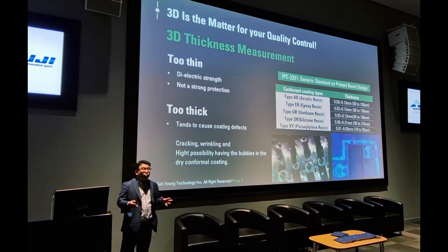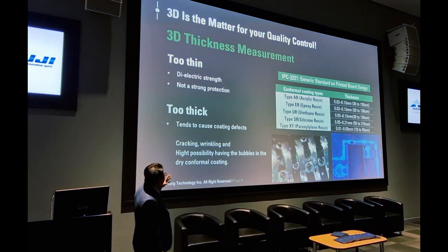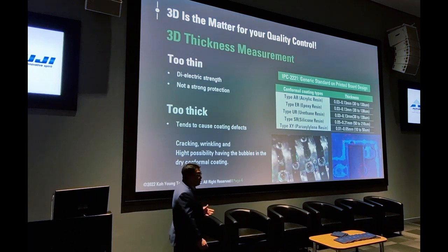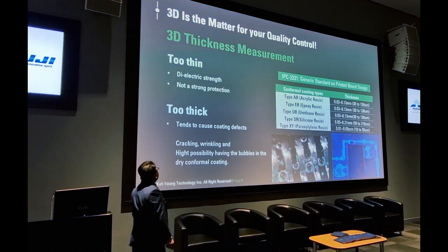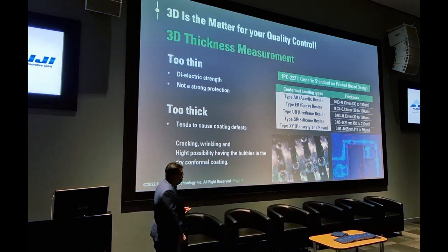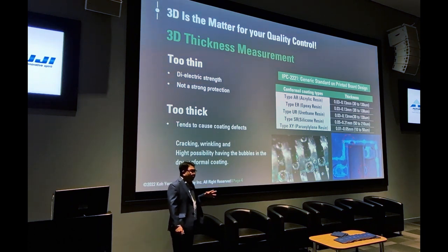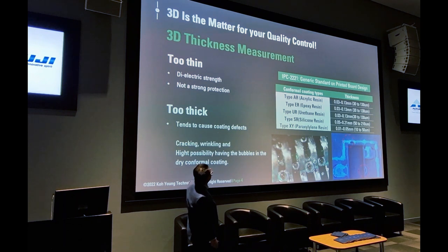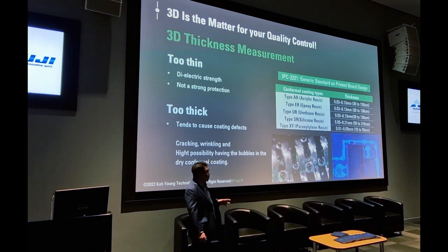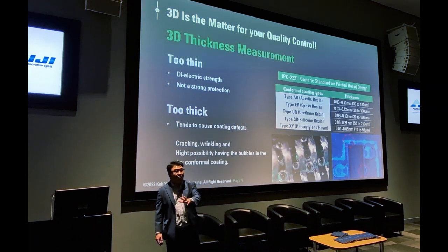Everyone knows that conformal coating thickness is really, really critical. Too thin or too thick — defects will follow. Too thin conformal coating thickness leads to insufficient protection. Too thick causes cracking, wrinkling, and also bubbles. So what is the problem with controlling the thickness of conformal coating? I approached different end users in automotive, military, aerospace, and industrial areas.